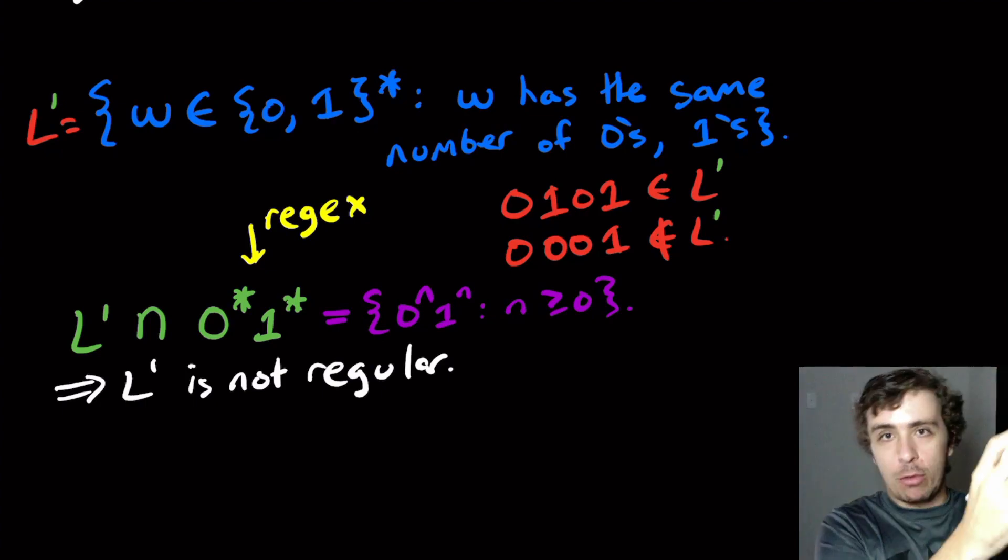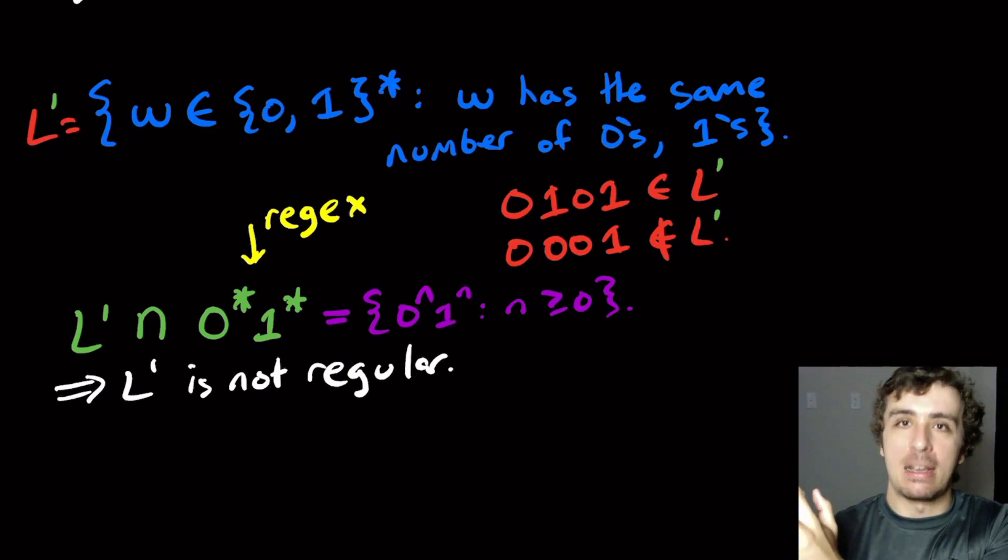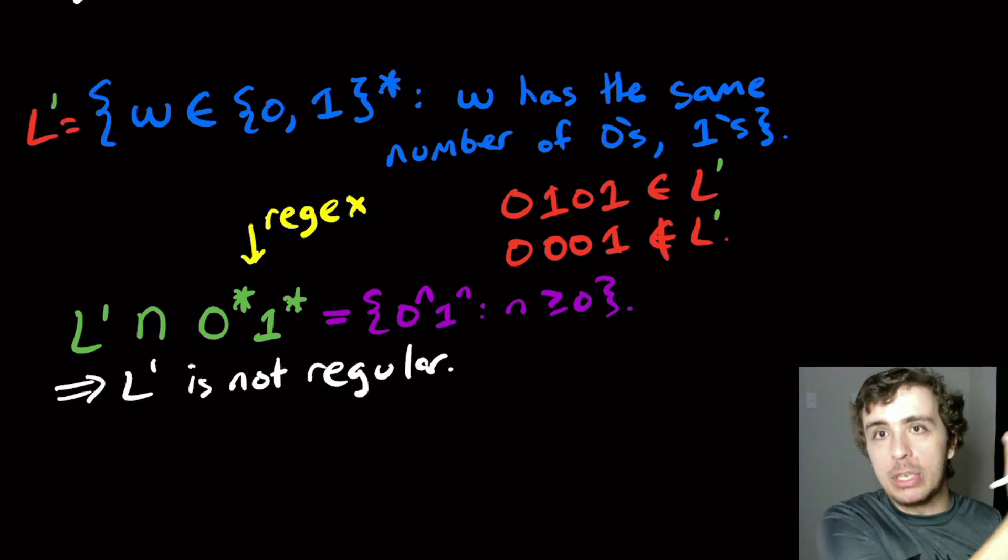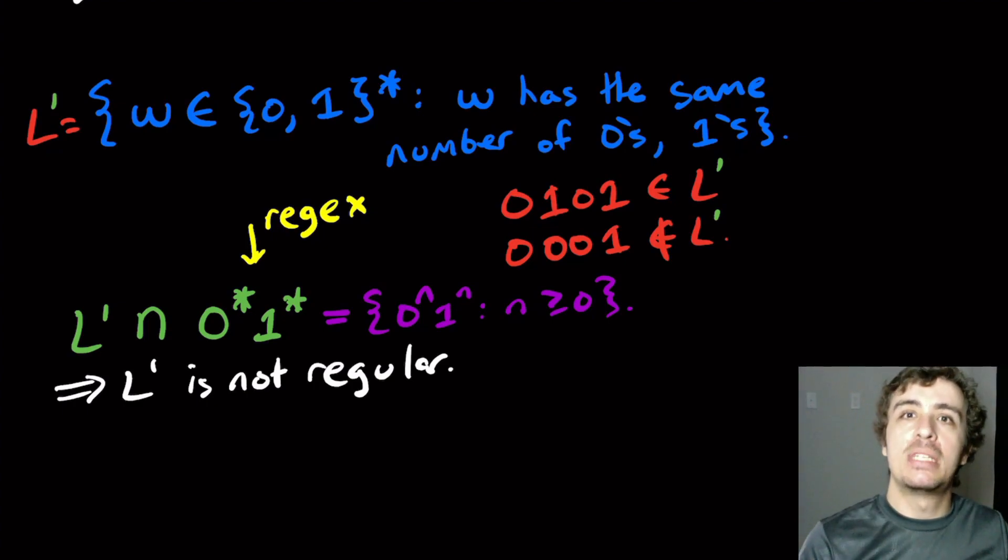If the language that we started out with is regular, then the complement language is also regular, because regular languages are closed under complement. So if we can show that the complement is not regular, then that shows that the original thing is not regular. And sometimes that's a lot easier.